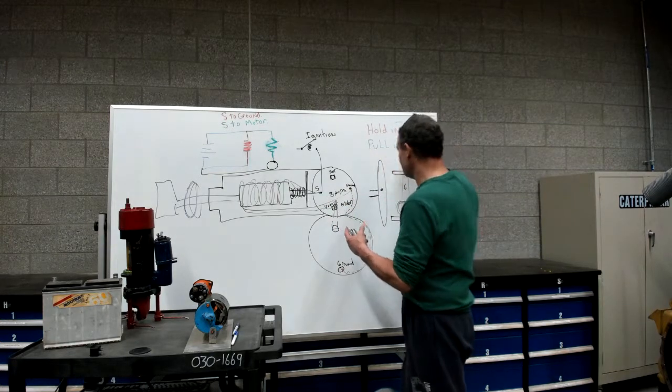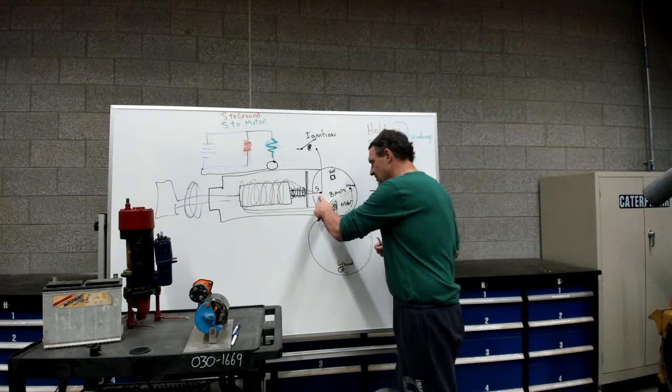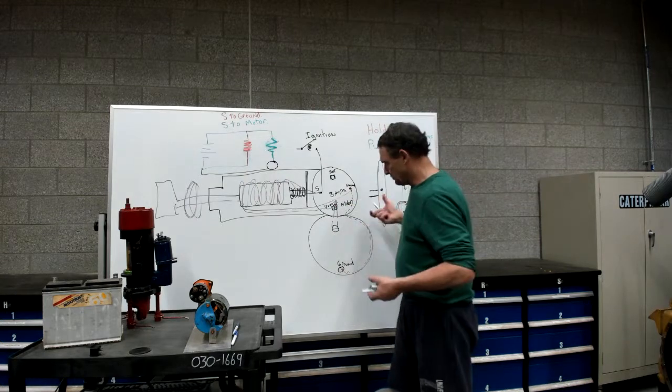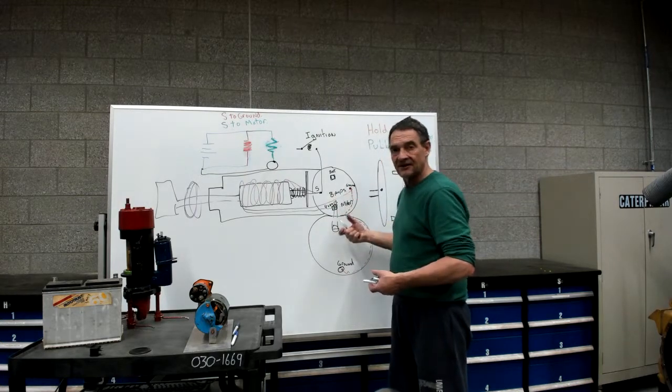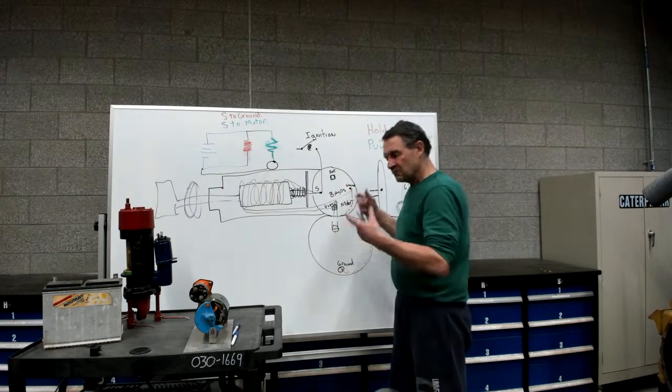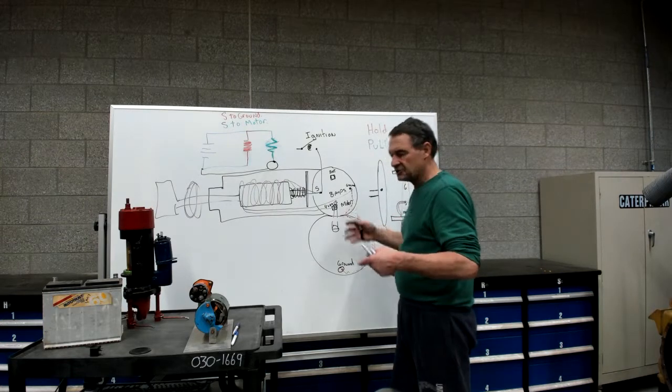Then you're going to do your pulling windings. You're going to go S terminal to the motor terminal. Put your ammeter on there and you're going to see 40 amps. You know they both work if you see that. You have to check and get specifications.